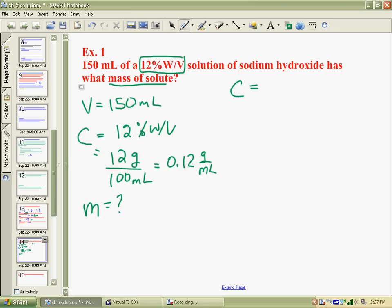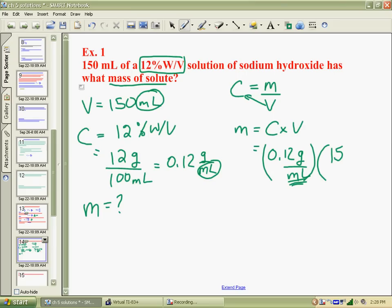Concentration is mass divided by volume. So when we rearrange that equation, we know that mass is equal to concentration times the volume. Our concentration is 0.12 grams per mil. And the only caution you have to have is that your volume better be in the same units of milliliters. And they are, they have mils. If one was liters and the other milliliters, you would have to deal with that.